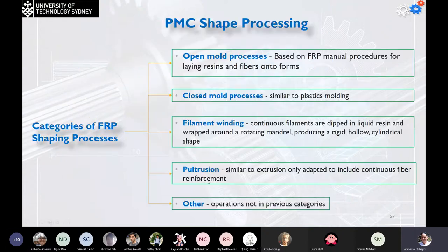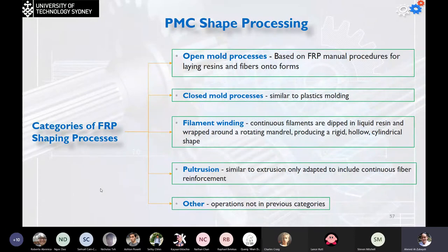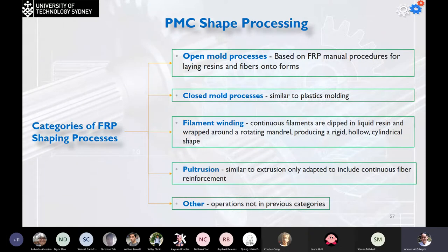The main processing methods for PMC include open mold processes, which are based on manual procedures for laying resins and fibers onto forms; closed mold processes, similar to plastic molding; filament winding, where continuous filaments are dipped into liquid resin and wrapped around rotating mandrels using rigid hollow cylindrical shapes; pultrusion, which is similar to extrusion but adapted to include continuous fiber reinforcement; and other operations not classified into those categories.